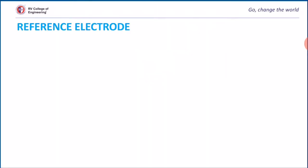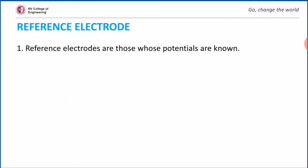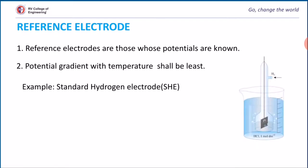A reference electrode is one whose electrode potential is known, or whose electrode potential has been arbitrarily fixed as zero. For example, the standard hydrogen electrode (SHE). However, the standard hydrogen electrode has some limitations: it is very difficult to maintain a constant pressure for a long time; platinum is easily poisoned by impurities; it cannot be used in the presence of oxidizing agents and reducing agents; and attainment of equilibrium between H⁺ and H₂ is slow. That is why we use other types of reference electrodes.